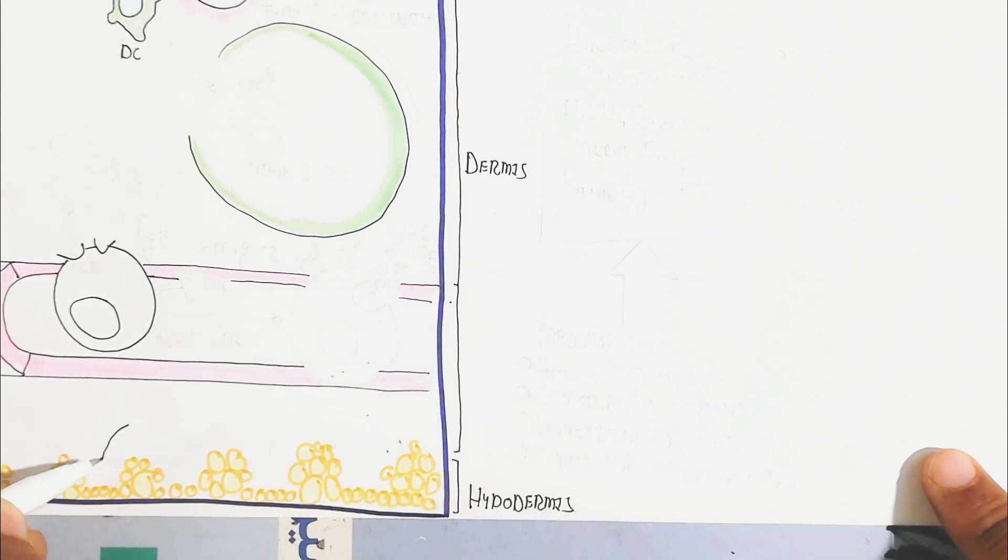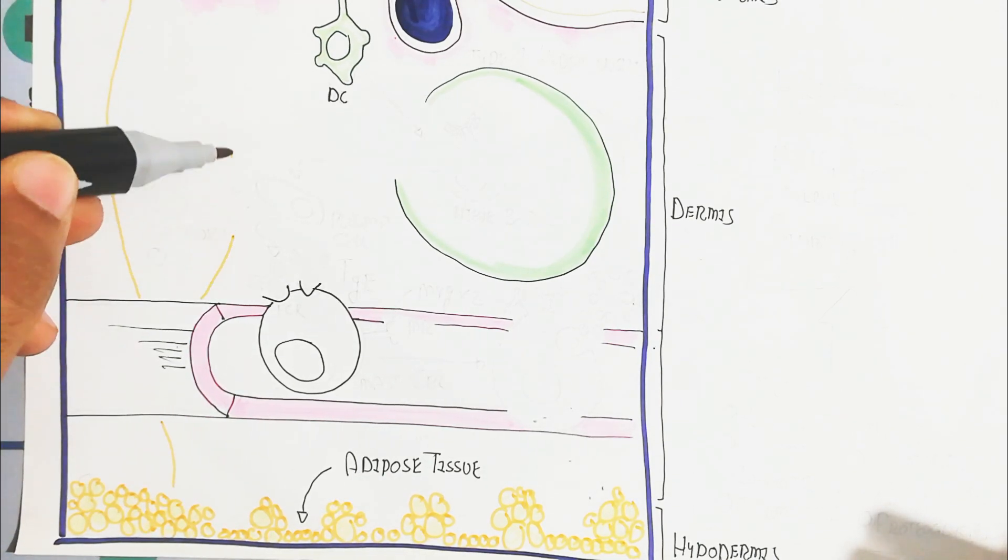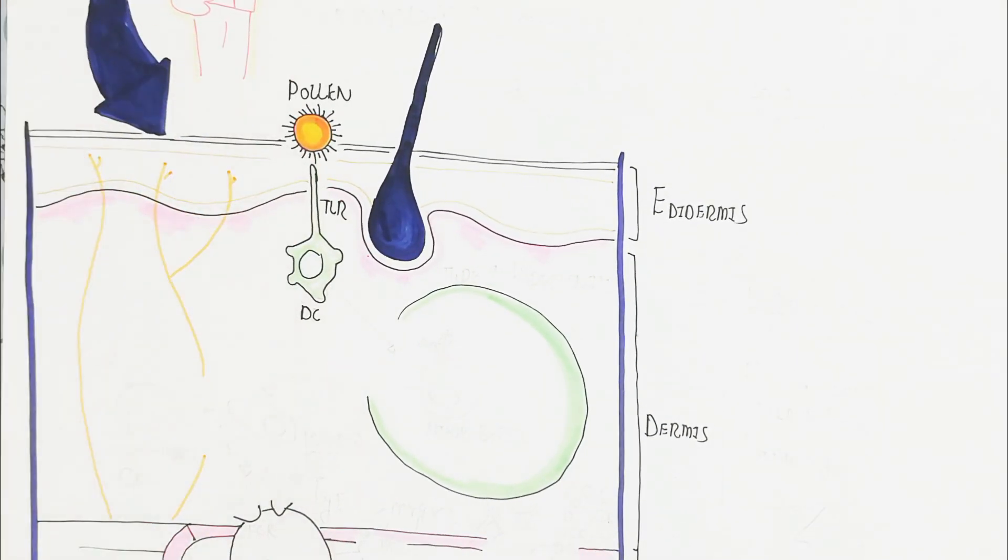This is the hypodermis containing adipose tissue, and dermis containing the lymphatic system and blood circulatory system. In the blood circulatory system, this is the nerve ending for pain sensation.